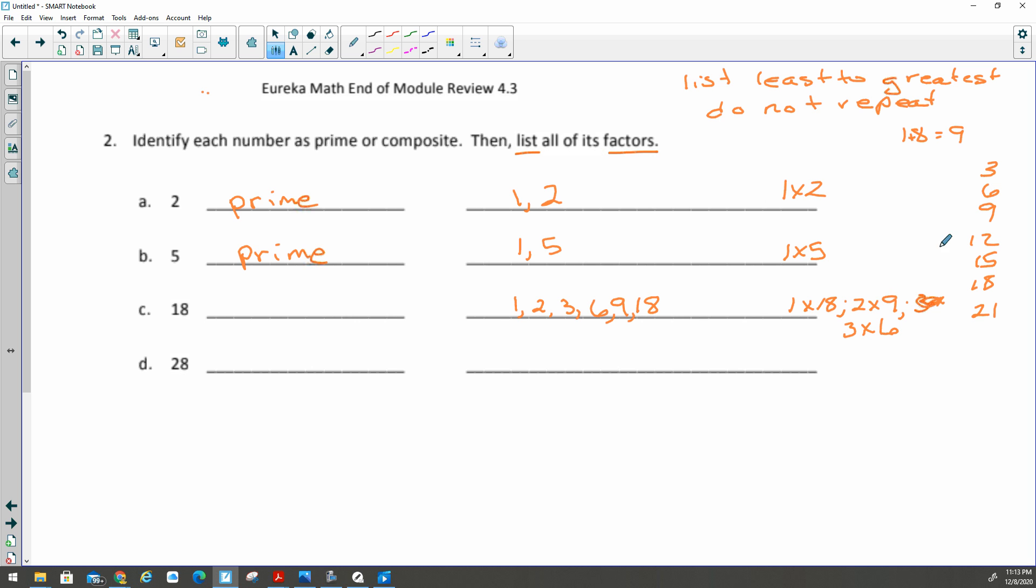Let's try 4. If I skip count by 4s, I do not get 18. 5, if I skip count by 5s, I definitely do not get 18. And 6 I already have, so that means I am done. Those are all of my factors. Since there's more than 2 factors, it's going to be composite.